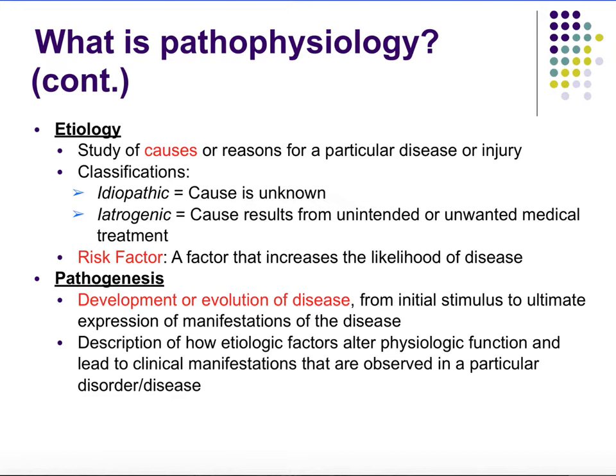Then we have pathogenesis. Pathogenesis is the development and evolution of the disease — from the initial stimulus to the ultimate expression of the manifestations of the disease. What were the steps that led to it developing and occurring?